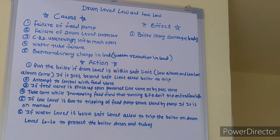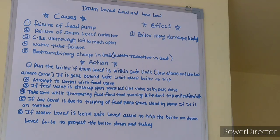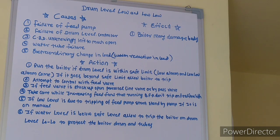Now let's discuss actions. Run the boiler if drum level is within safe limit — low alarm and low-low alarm have come. If it goes beyond safe limit, allow the boiler to trip. Attempt to control with feed control valve. If feed valve is stuck, use parallel line valve or bypass valve. Take care while increasing feed flow that the running BFP does not trip on feed flow high.